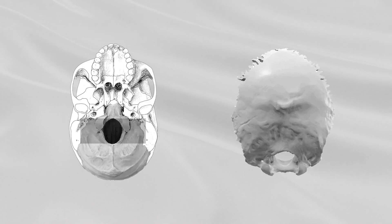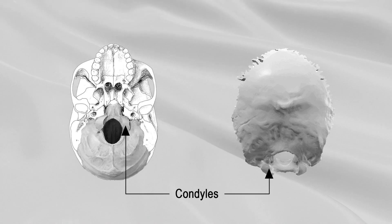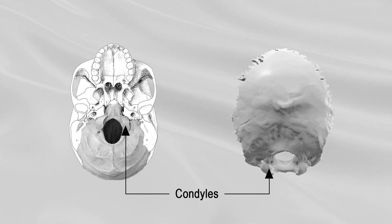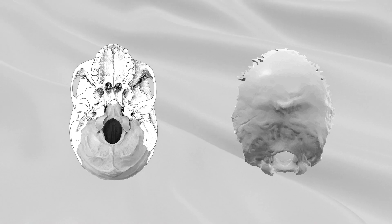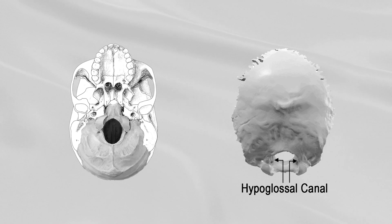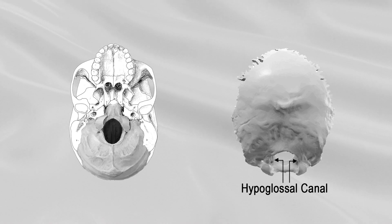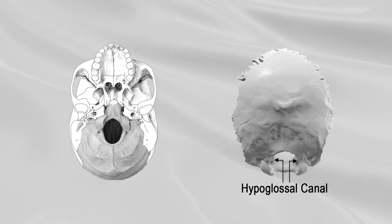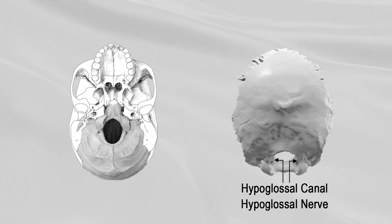The lateral parts are situated at the sides of the foramen magnum. On their undersurfaces are the oval or reniform condyles, which articulate with the superior facets of the atlas. At the base of either condyle, the bone is pierced by a short canal, the hypoglossal canal. This begins immediately above the foramen magnum, is directed forward and laterally, and gives exit to the hypoglossal nerve.